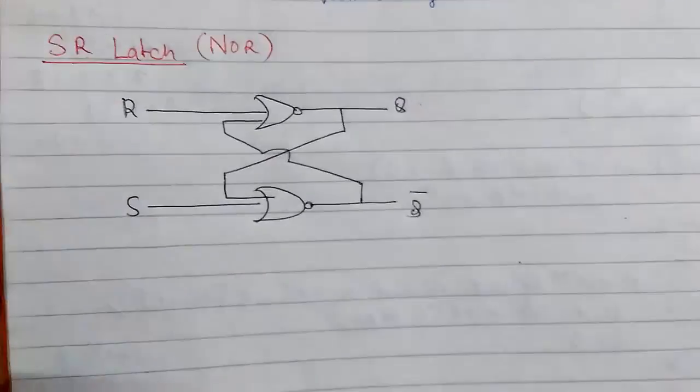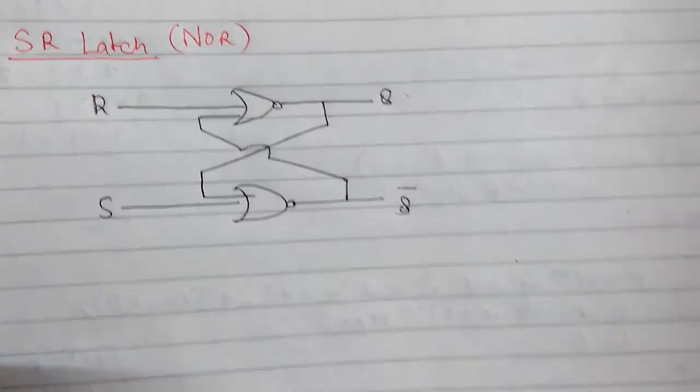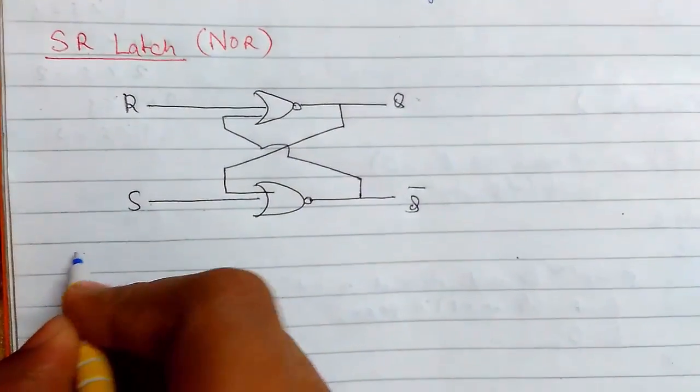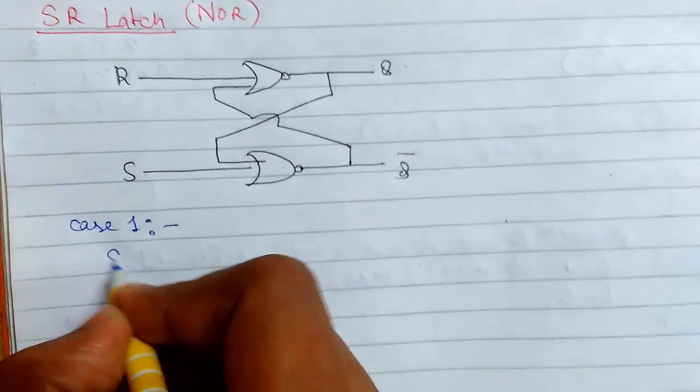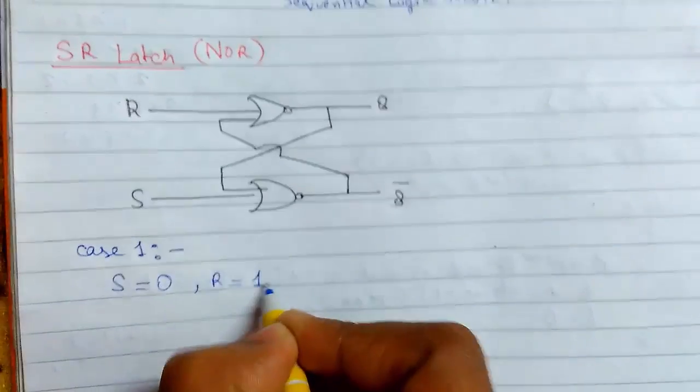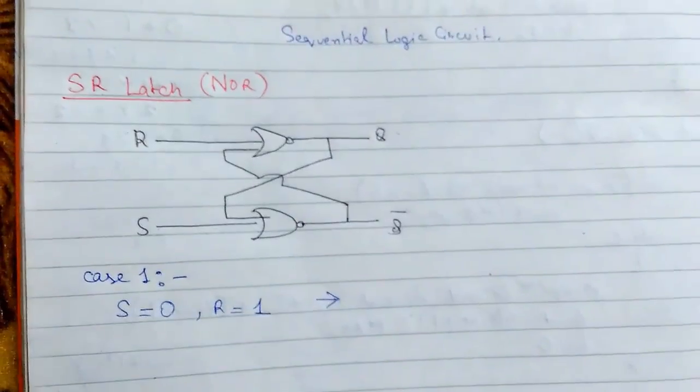First of all we will study case 1, when we have S is 0 and R is 1. So we will see what will be our output. So suppose this is 0 and this is 1.